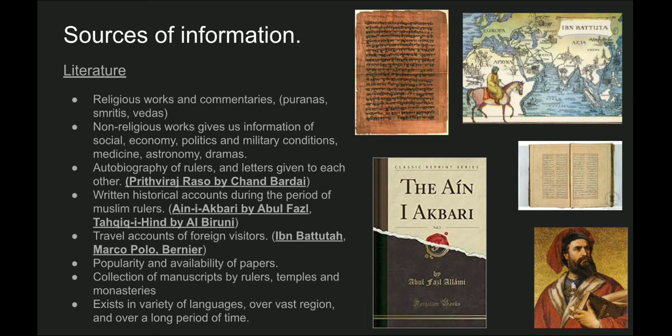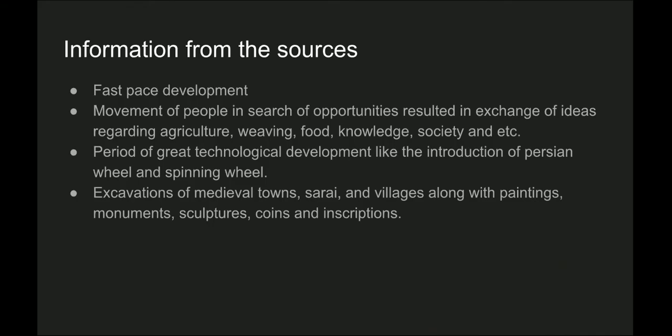People came from China, Persia, and other places. The main reason for the flourishment of literature was due to the popularity and availability of paper. There are collections of manuscripts by rulers, temples, and monasteries. These literary sources exist in a variety of languages that developed in different regions, like Kannada, Tamil, Bengali, Hindi, and Sanskrit.